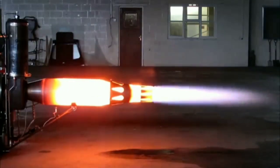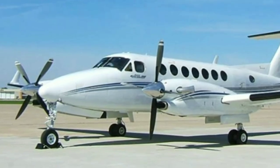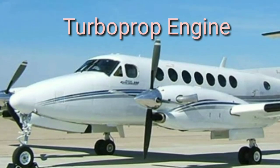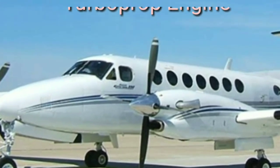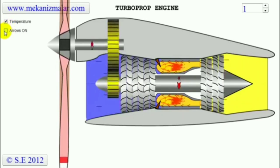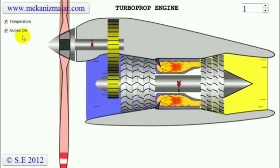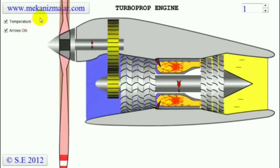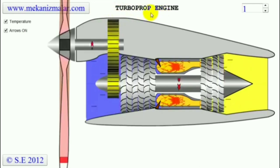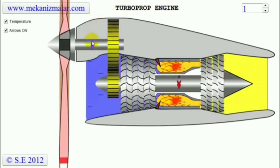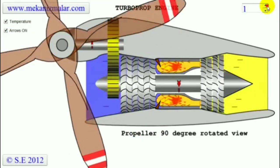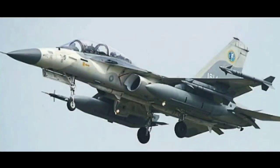The turboprop engine works similarly to a turbofan or turbojet engine. The difference is that the hot combustion gas, after expanding through the turbine, is transmitted to a reduction gear — shown in yellow — and then to the propeller. Further expansion of the gas occurs in the propeller nozzle, where the gas exhausts to the atmosphere.